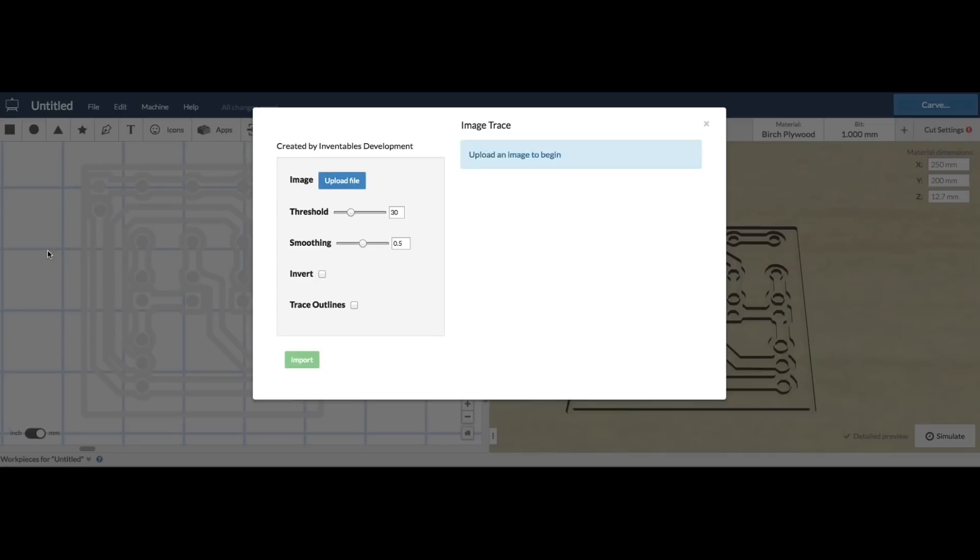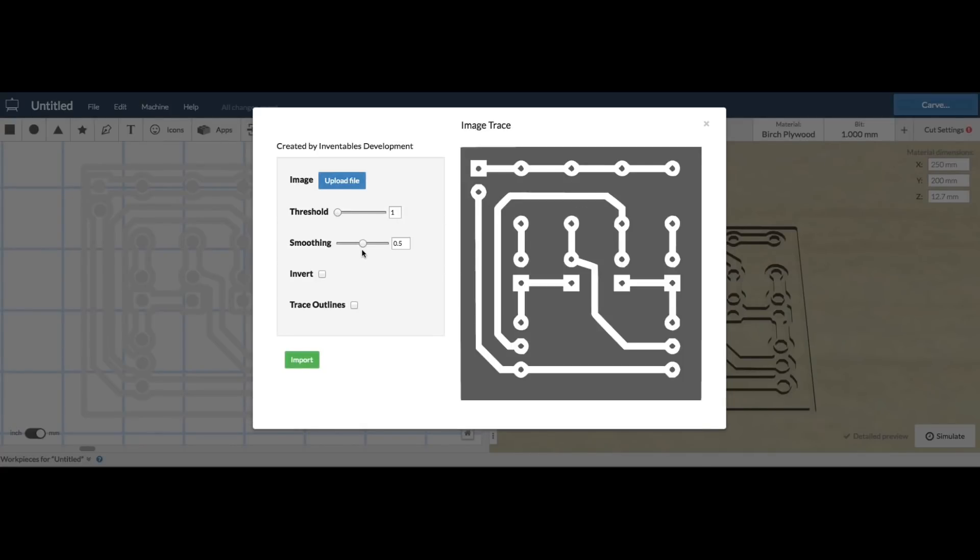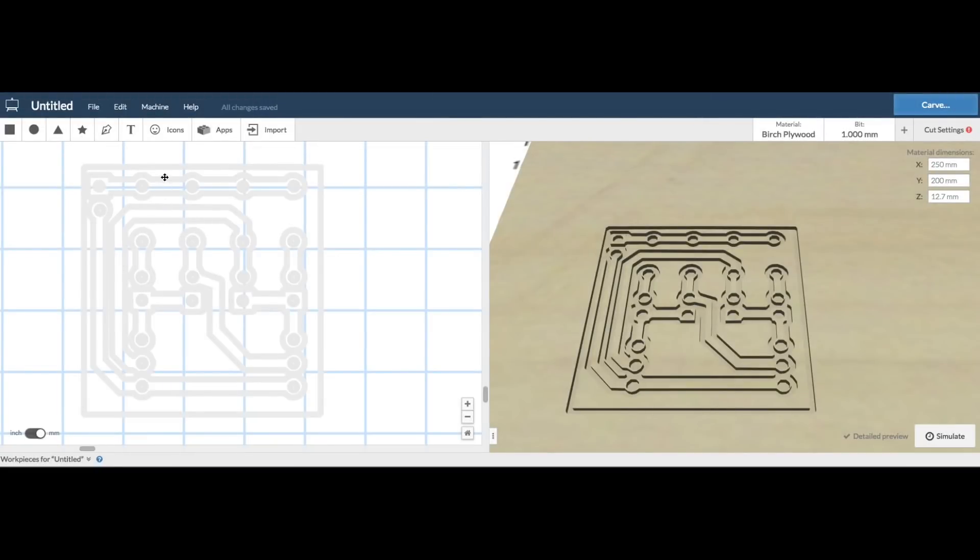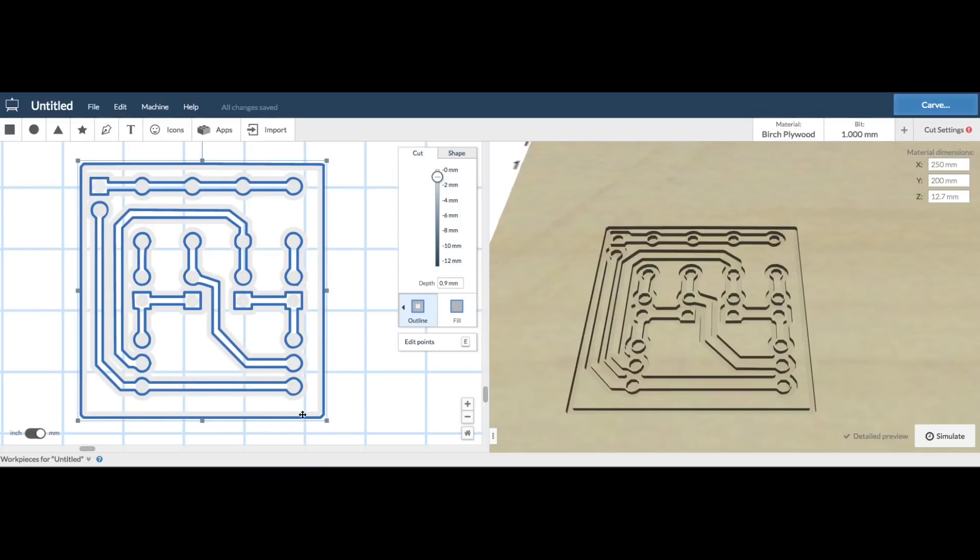So I imported that image and then I set the threshold very low and it looked great. This is what I was looking for. So then I did trace outline and I got the outlines of what I wanted to cut. So this was looking really good and here it is imported into Easel.